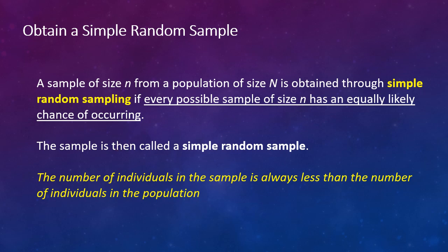The sample is then called a simple random sample. So the group of 100 that I just mentioned would be called a simple random sample. And hopefully this last part in yellow and italics is common sense and logical to you, that the number of individuals in a sample is always less than the number of individuals in the population, because you're taking groups out of a population. The population is the larger group and you're taking a smaller subset which is the sample.